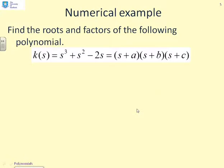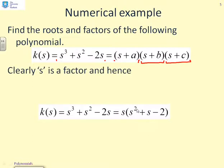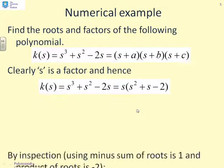So here's a different example. Find the roots and factors of the following polynomial. So k(s) = s³ + s² - 2s. And I'm going to assume it's got real roots, so I can write it as (s+a)(s+b)(s+c). Now, again, for this case, it's obvious that s is a factor. And hence, I can write this as s³ + s² - 2s = s(s² + s - 2).